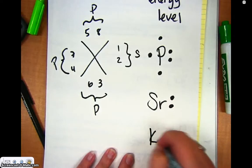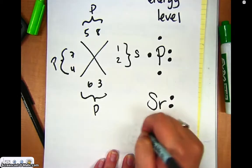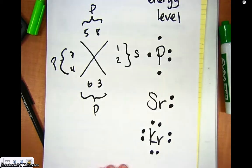So it's going to have 2 in the S, and then 1, 2, 3, 4, 5, 6 in the P. Right?